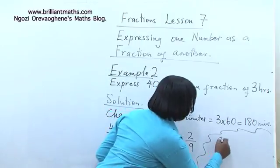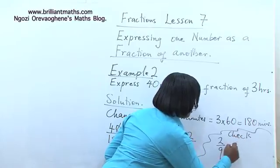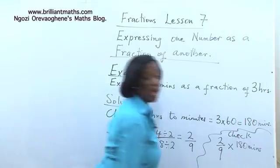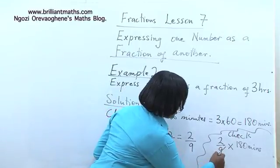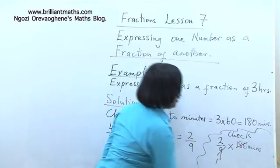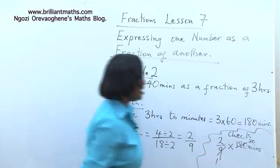If we find 2 ninths of 180 minutes, are we going to get 40? Let's see. 9 and 9 is 1, 9 and 18 is 2, so 9 in 180 is 20.